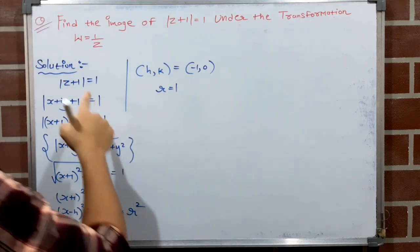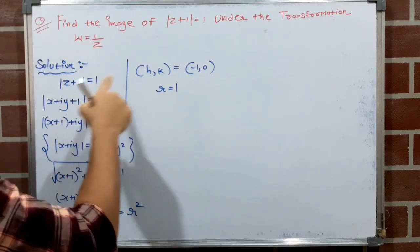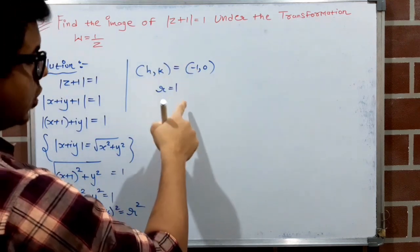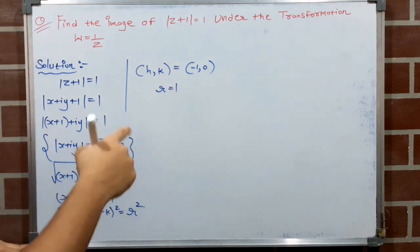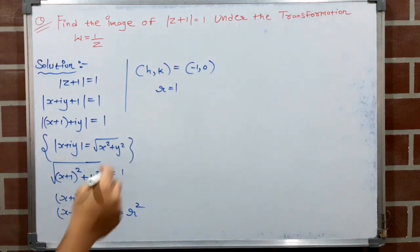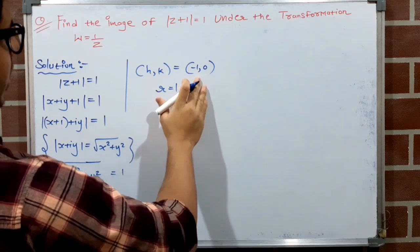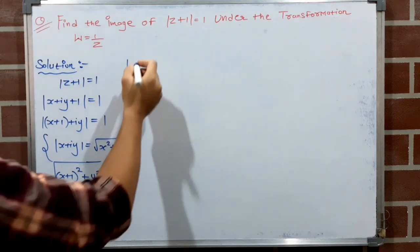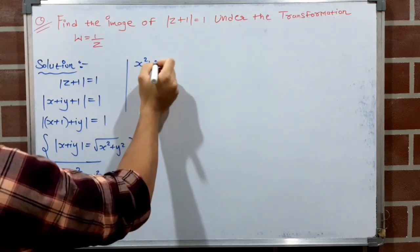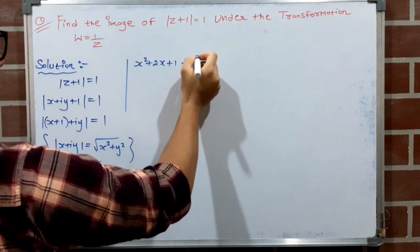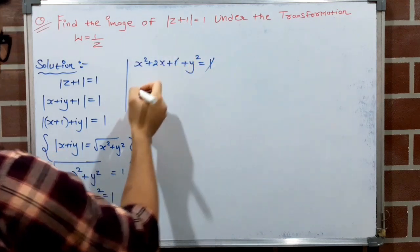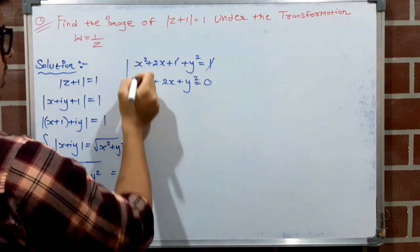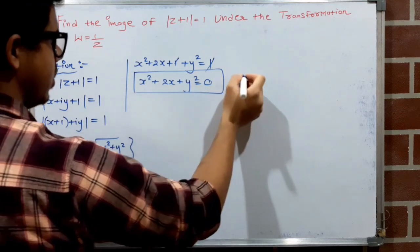So this equation represents a circle with center (−1, 0) and radius 1. I will show the circle at the end of the solution. Now expanding: x²+2x+1+y²=1, the 1s cancel, giving x²+2x+y²=0. Let this be equation 1.